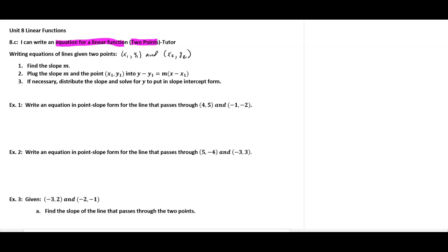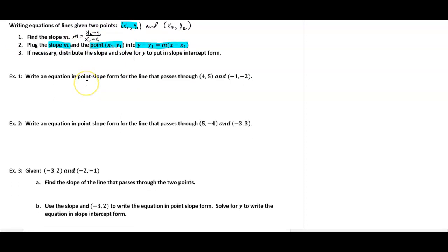Anytime you write the equation of a line, the first thing you always do is find the slope using the formula: y2 minus y1 over x2 minus x1. Once you do that, you pick one of the points — it doesn't matter which — take the slope and plug it into point-slope form. If you need slope-intercept form, distribute the slope and solve for y.